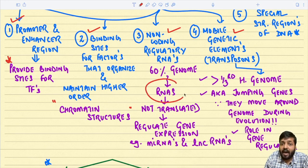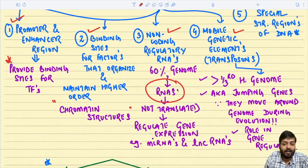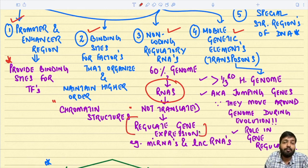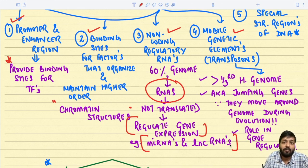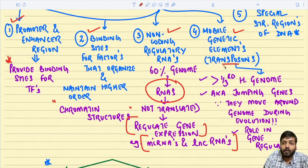Non-coding regulatory RNAs: approximately 60 percent of the genome encodes certain RNAs which are not translated at all. These RNAs usually regulate gene expression. Very important examples are micro RNAs and long non-coding RNAs, which we are going to discuss in detail today.